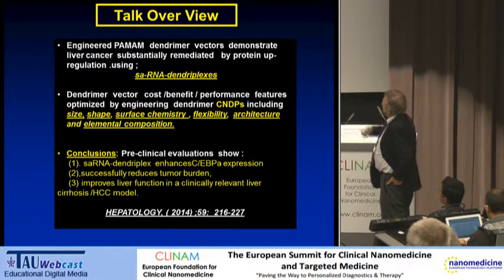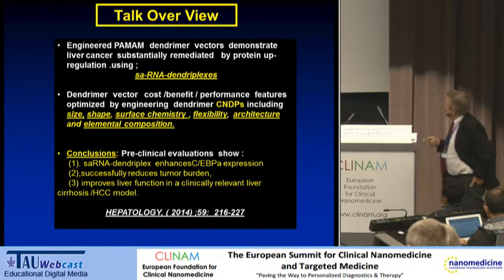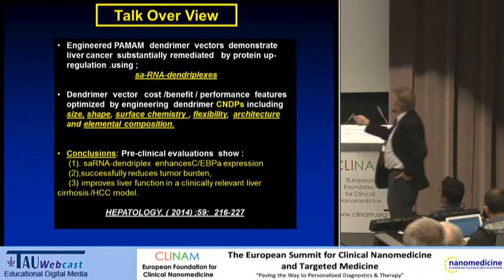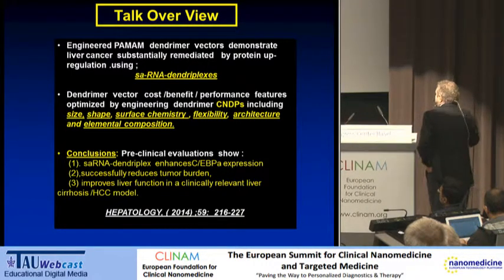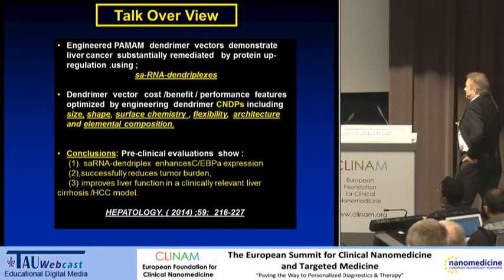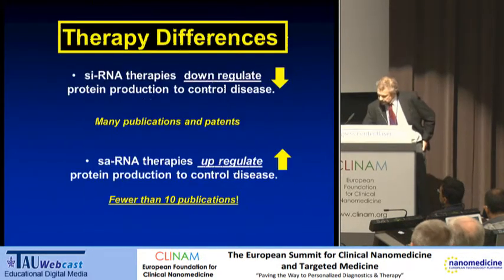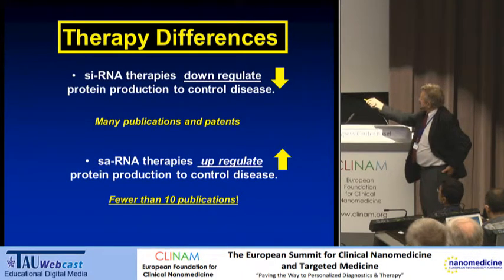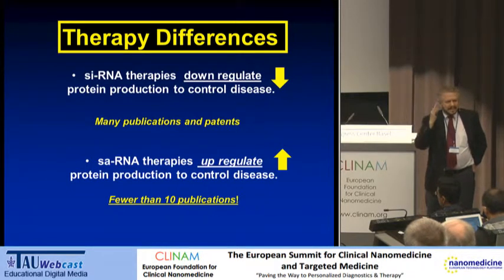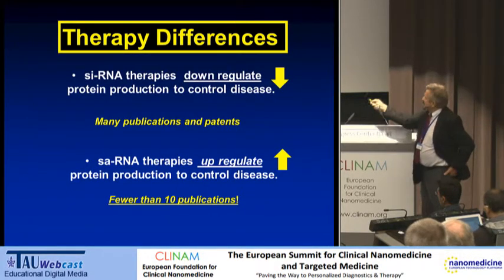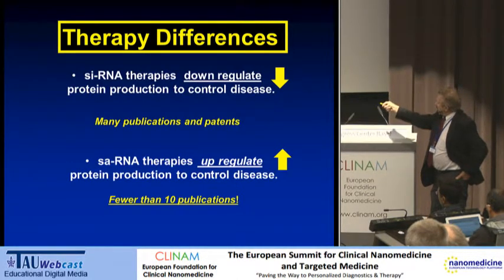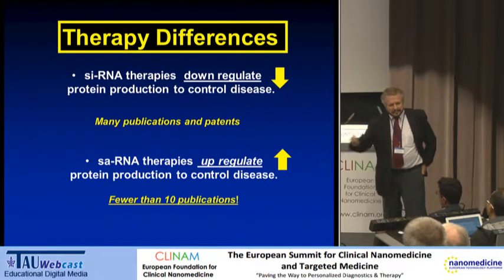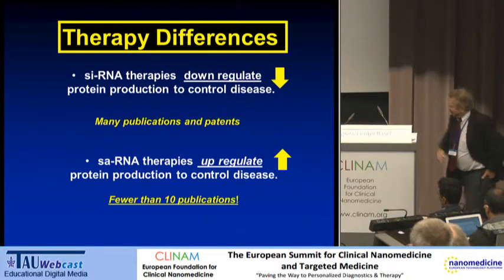Our conclusions are: we have seen very favorable protein expression by up-regulation, we have successfully reduced tumor burden, and we have improved liver function in a clinically relevant liver cirrhosis model. Just to remind you, this is not siRNA — which the world has seen many publications and patents on. We're talking about small activating RNA therapy, where there are fewer than 10 publications in the whole literature, and we recently contributed one of them.